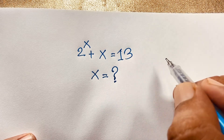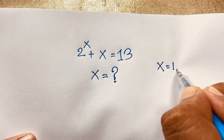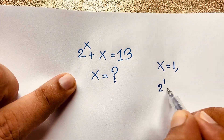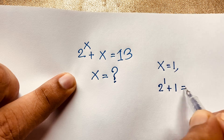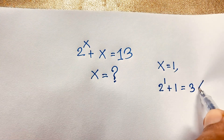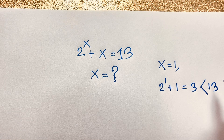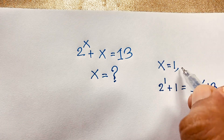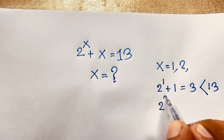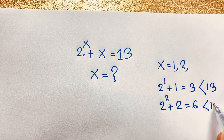I will solve this question using an easy method. First of all, I take x is equal to 1. If x is equal to 1, it will be 2 to the power 1 plus 1, which is equal to 3. So it is less than 13. Then if you think x is equal to 2, it will be 2 to the power 2 plus 2, which is 6. It is also less than 13.